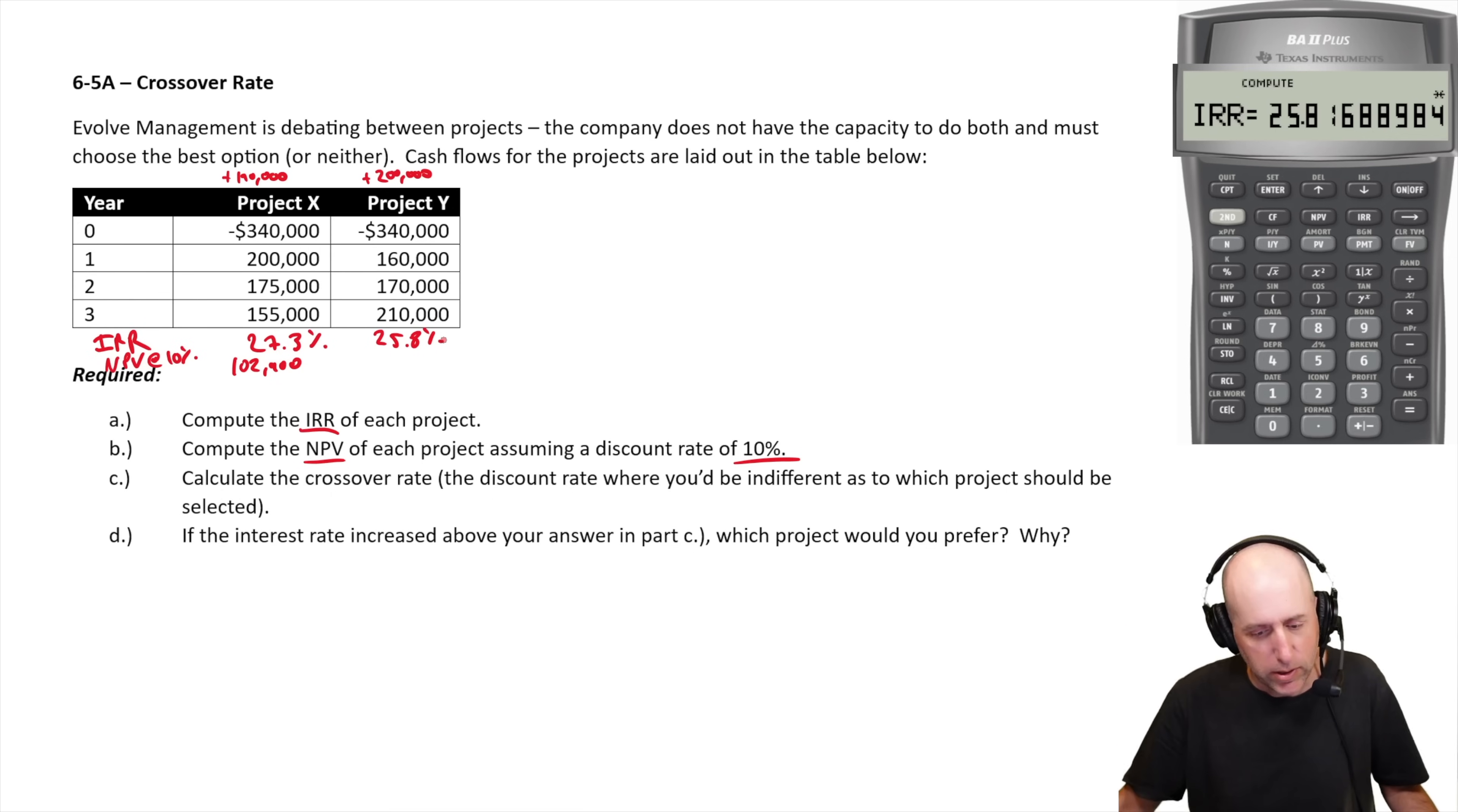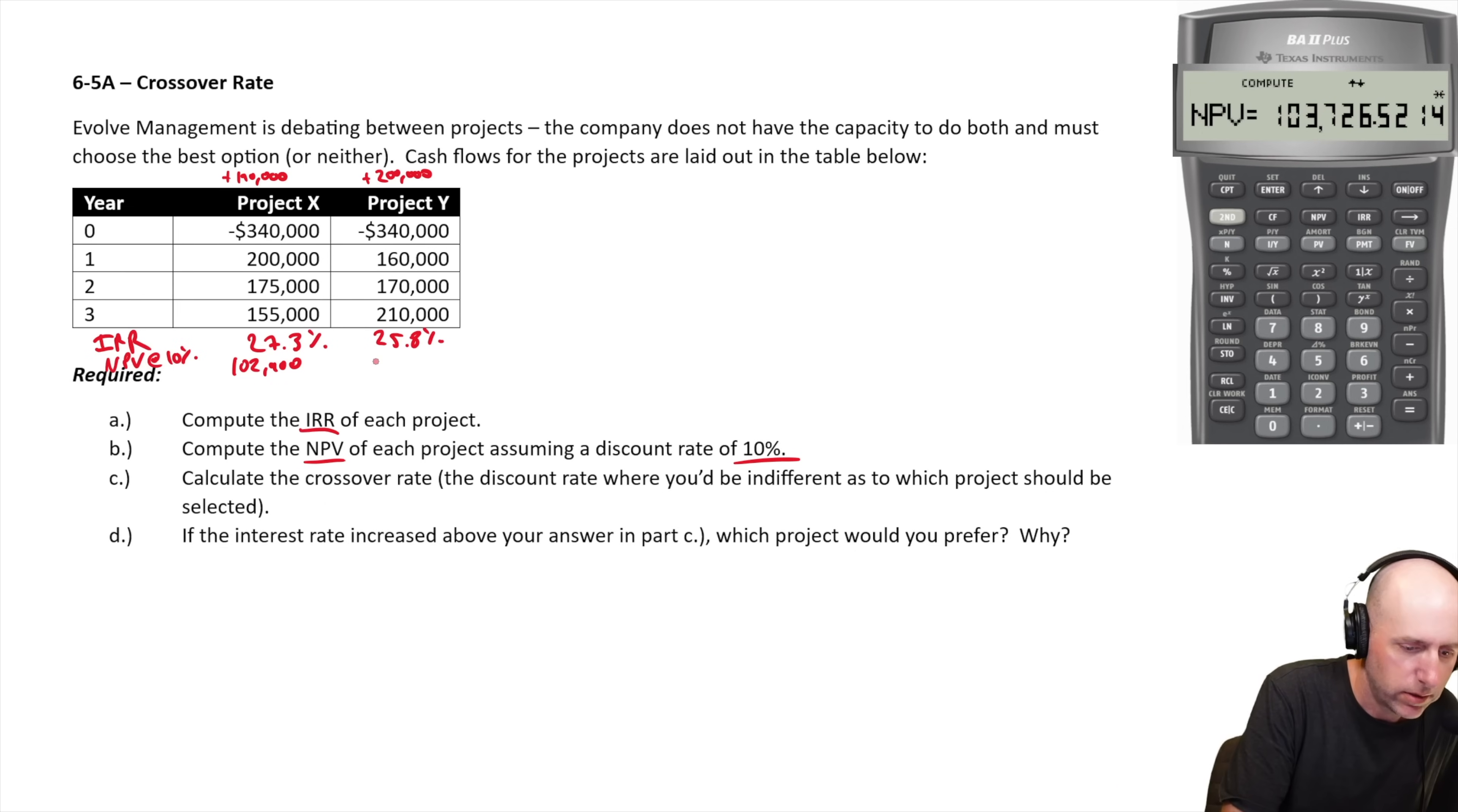And we'll see what the NPV is. The net present value. Is it also lower? I don't know. So I go NPV. And it's the NPV at 10%. So I is 10. Hit enter. Down arrow. Compute. $103,726. Oh, interesting.